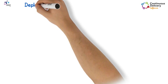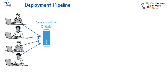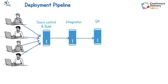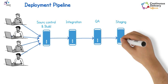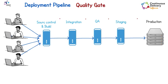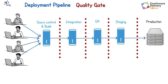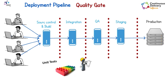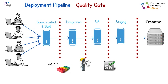Deployment pipeline: it is the train stations that the code must go through until it reaches production. Quality gate: a gate that has some conditions to pass the code from one station to another on the deployment pipeline. It can be manual through a quality resource, or automatic through automated unit or functional testing, or even a security penetration testing system.